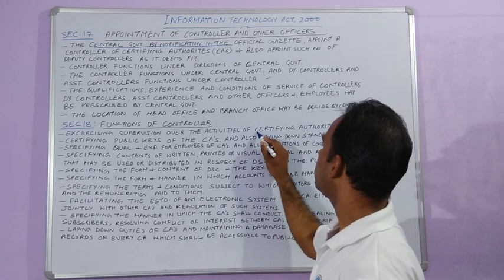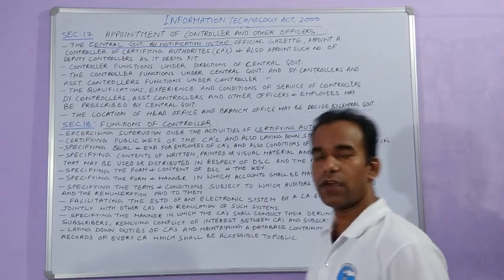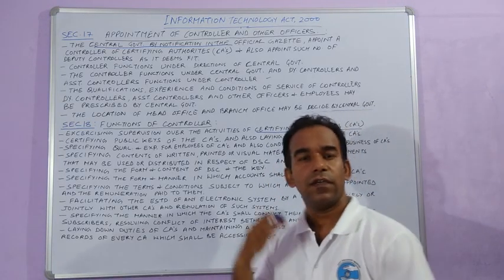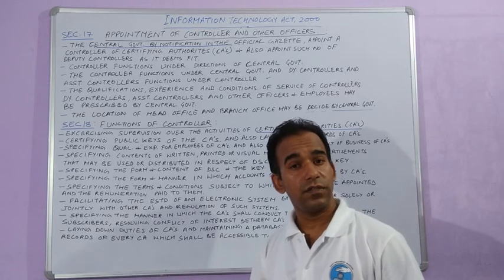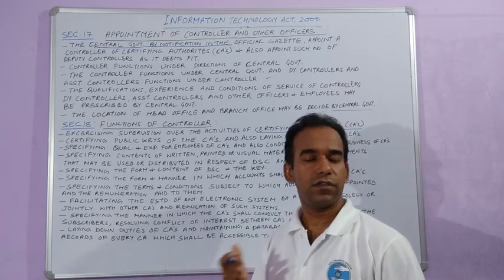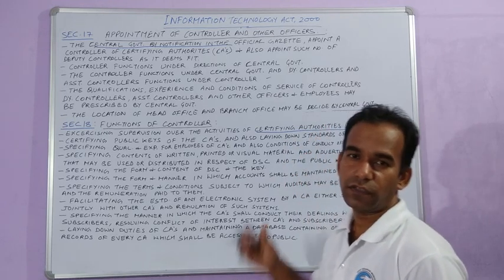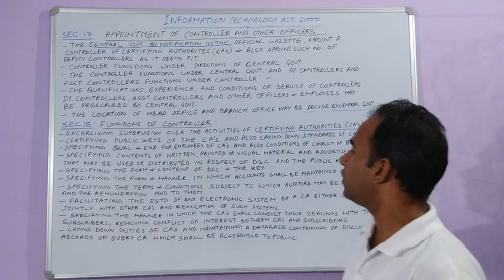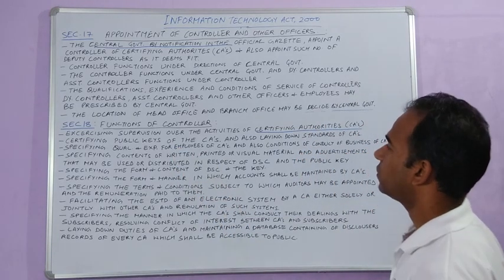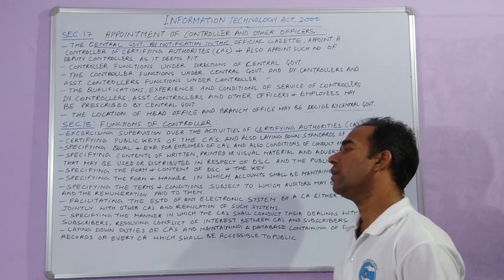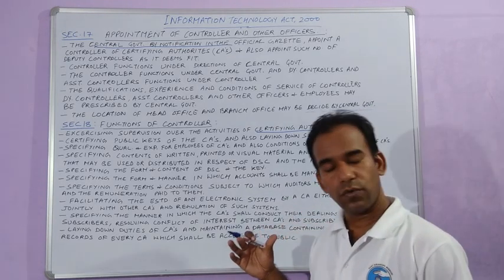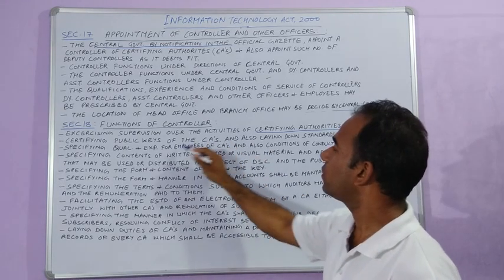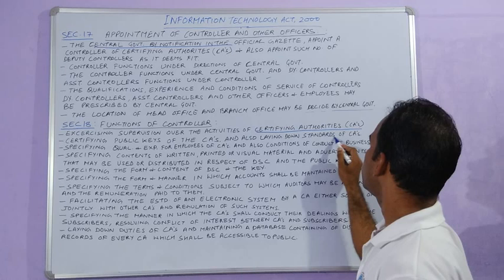Certifying authorities issue digital signatures, electronic signatures, and digital certificates. The controller is responsible for certifying the public keys of the certifying authorities, and also for laying down the standards of certifying authorities.